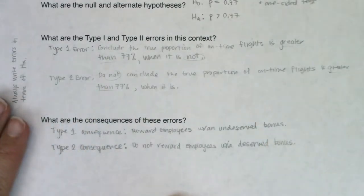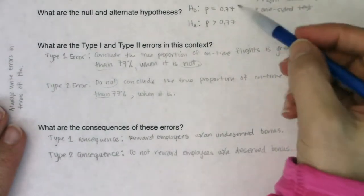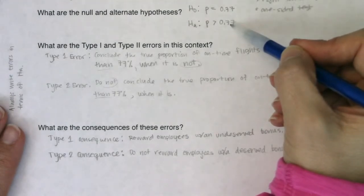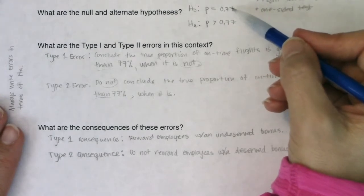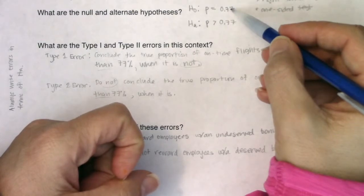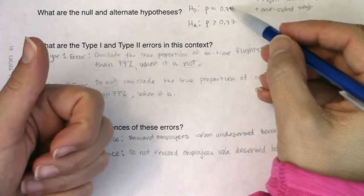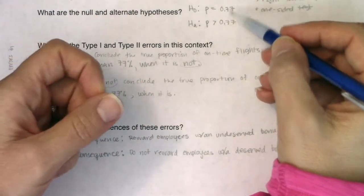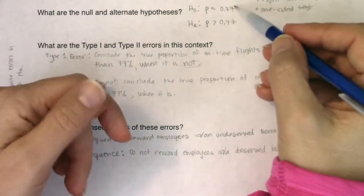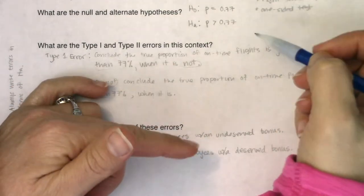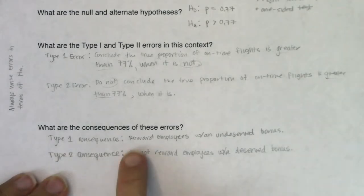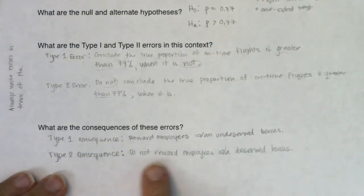There are ultimately four outcomes: employees don't deserve a bonus and I don't give it — great. Employees deserve a bonus and I give it — great. Employees don't deserve a bonus but I give it — problem. Employees deserve a bonus and I don't give it — also a problem. So: Type 1 consequence — reward employees with an undeserved bonus; Type 2 consequence — do not reward employees with a deserved bonus.